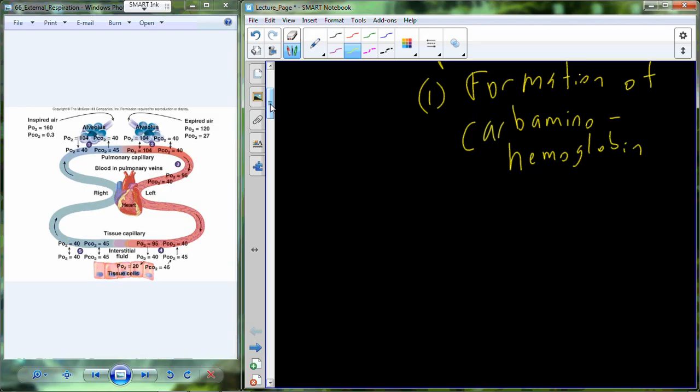The chemical reaction for creating carbaminohemoglobin is to take your hemoglobin that has probably just released its oxygen to the tissue and it combines with CO2 that is now readily dissolving into the plasma. Whenever you have hemoglobin in the presence of carbon dioxide, it forms carbaminohemoglobin, abbreviated as HBCO2.